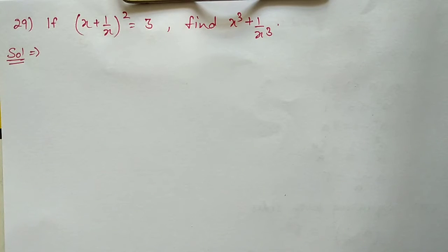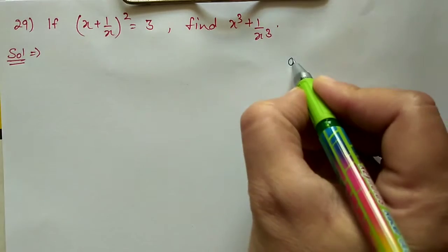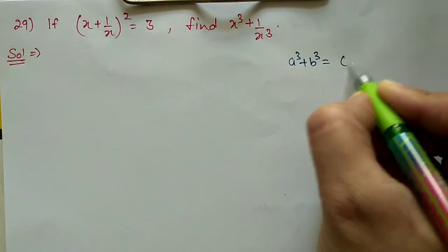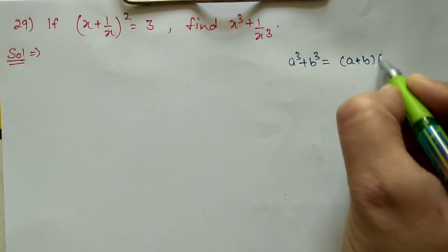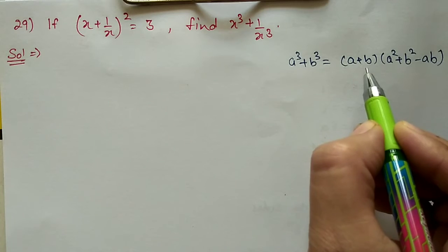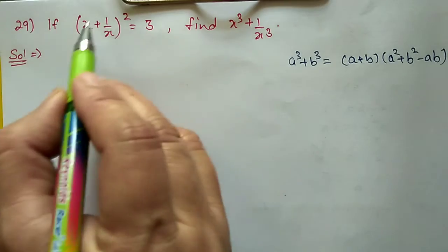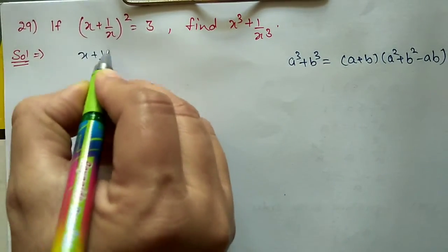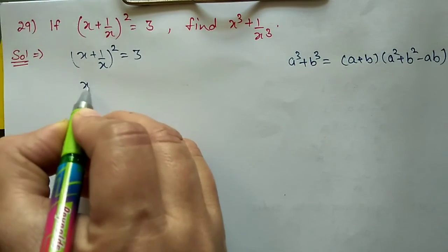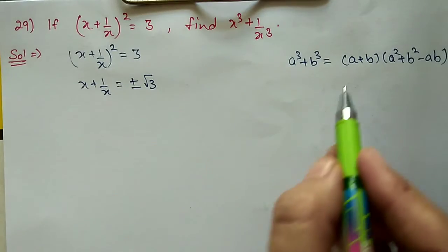Next, question number 29: if (x + 1/x)² = 3, find the value of x³ + 1/x³. We will use the formula a³ + b³ = (a + b)(a² + b² − ab). For this we need the value of a + b and a² + b². From (x + 1/x)² = 3, we get x + 1/x = ±√3.